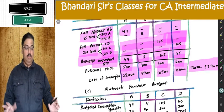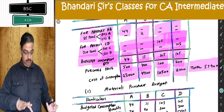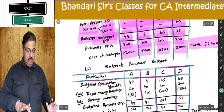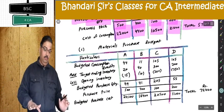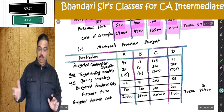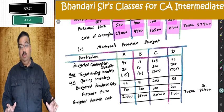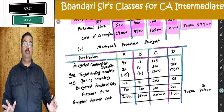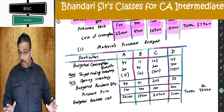Very easy question. C point: Purchase budget. For purchase, what I need to do? I need to make adjustment of closing stock and opening stock. Once I do that, I will be able to get the purchase quantity. Multiply with purchase price per unit and I will get the purchase amounts.